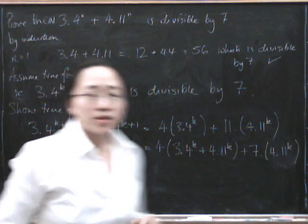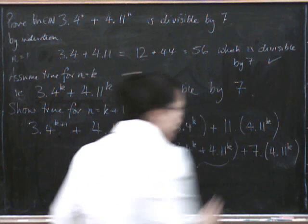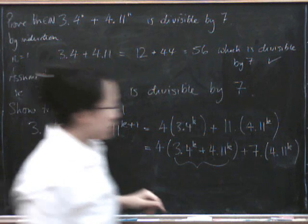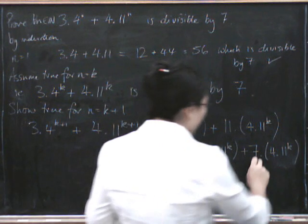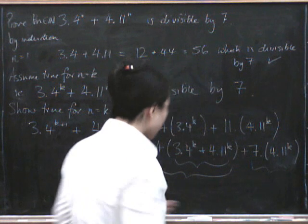Now, that's rather handy, isn't it? Because here, this part is divisible by 7 by the induction hypothesis. So, that means that this part is divisible by 7, and this part is divisible by 7 because it's 7 times something. So, we're done.